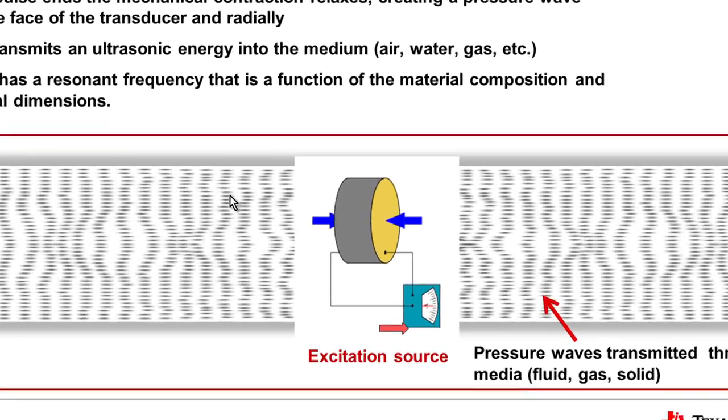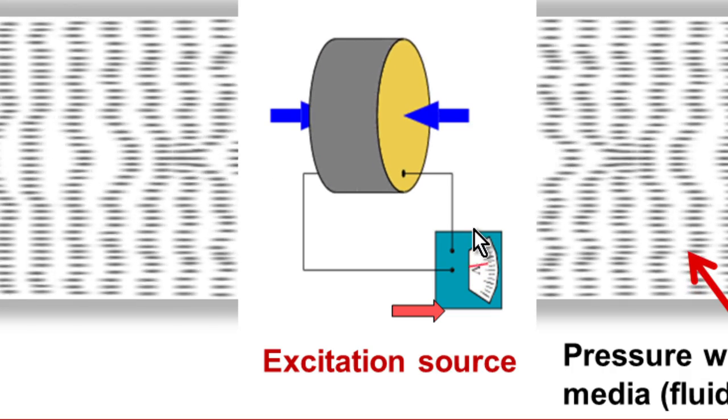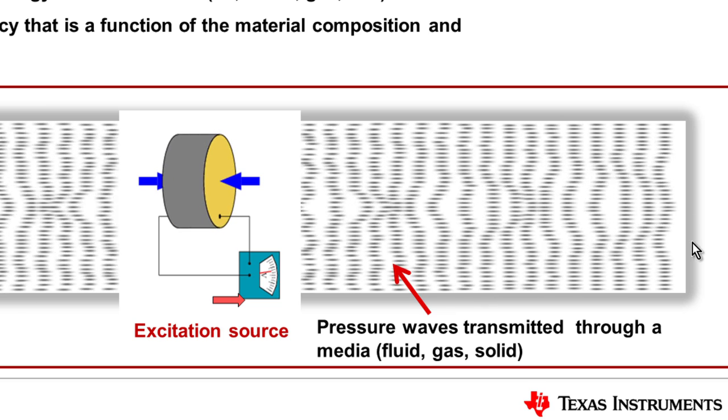In this diagram here, we can see as the voltage is applied, the crystal contracts when there's a voltage present. That pressure wave then moves through the material to the boundary.